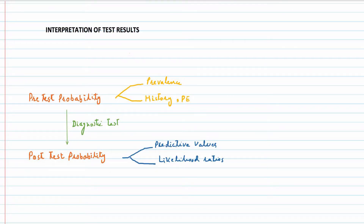For interpretation of a test result, we need to know the concepts of pre-test and post-test probability. Pre-test probability is the probability of presence of a disease before we have performed a diagnostic test. It is equal to the prevalence of disease before history and physical examination. After history and physical examination, pre-test probability changes based on findings. After we have estimated pre-test probability, we perform a diagnostic test and then calculate post-test probability. Post-test probability is the probability of presence of a disease after test results are known.